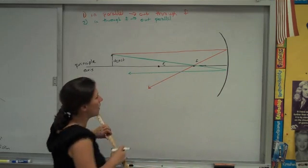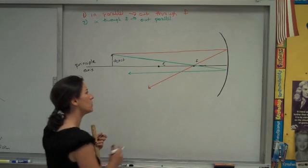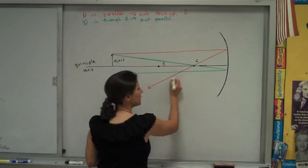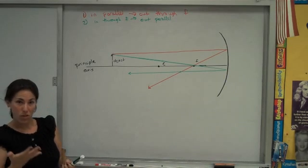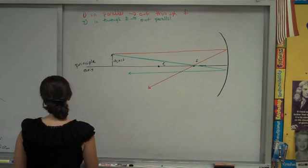And at this point, I could stop because I can already see where these reflective rays are intersecting. So I know where the image is going to be. But it doesn't hurt to know the third confirmation rule if you want to use it.